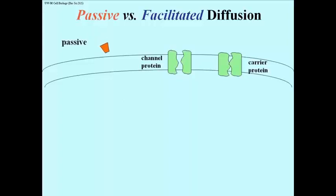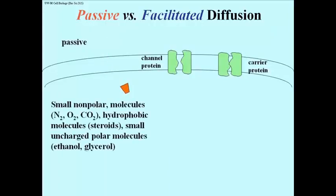Passive diffusion shown here is simply the movement of a molecule directly across the phospholipid bilayer. This kind of passive diffusion is limited to small non-polar molecules like the gases nitrogen, oxygen, carbon dioxide, some hydrophobic molecules such as steroids which do not have trouble negotiating a hydrophobic fatty acid environment, as well as small uncharged but perhaps somewhat polar molecules like alcohol, that is ethanol, and glycerol.